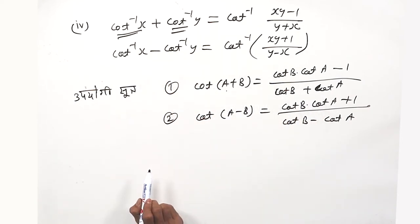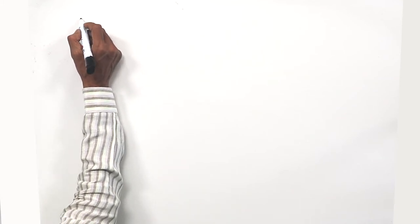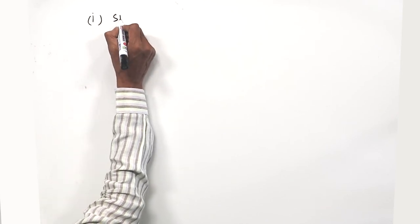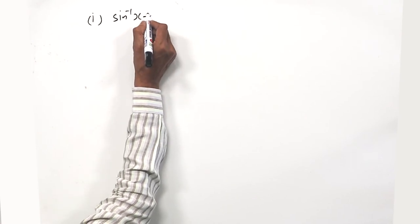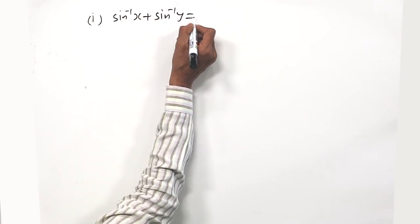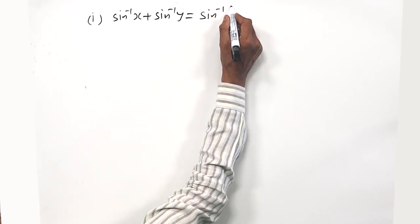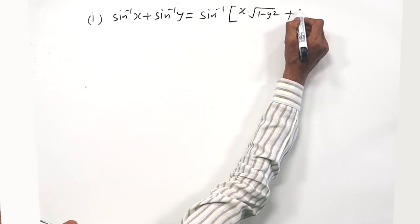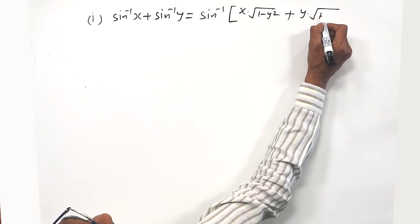Now, sin⁻¹x + sin⁻¹y is equal to sin⁻¹ of: x · √(1 − y²) + y · √(1 − x²).